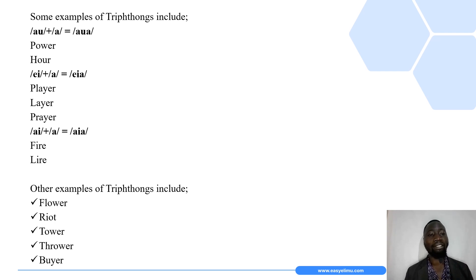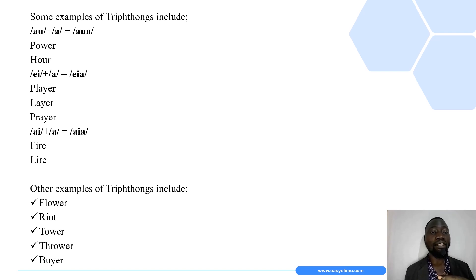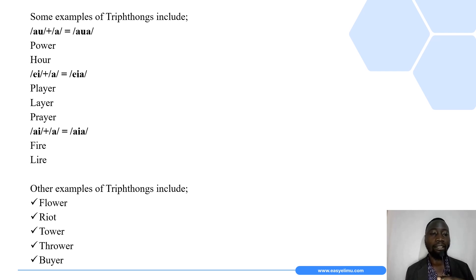We also have triphthongs made up of the two vowel sounds /eɪ/ plus /ə/, making the triphthong /eɪə/. This occurs in words such as player, layer, and prayer.